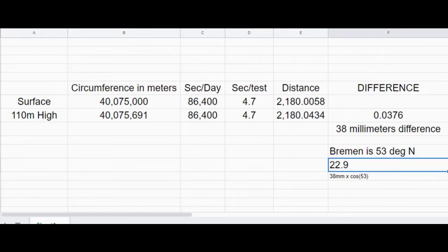Yes, the distance at the surface and the distance at the tower top are different due to rotation. Did you calculate how much? So the circumference is 40,075 kilometers, same. And if you go up 110 meters, we multiply that by 2 by pi, 691 meters further. So that's about 140,000 difference. So at 4.7 seconds, the tower has moved the same distance as the base plus a little bit more, and that little bit more is 37 millimeters.